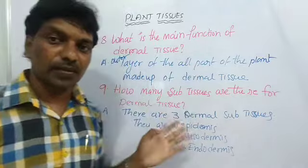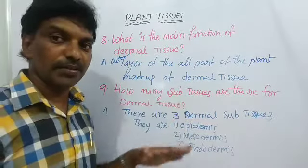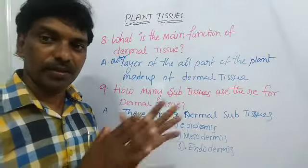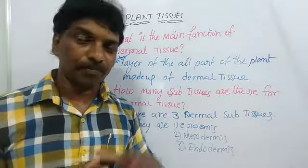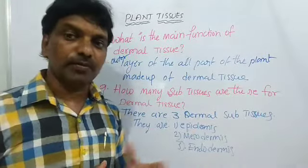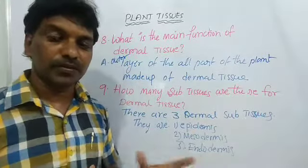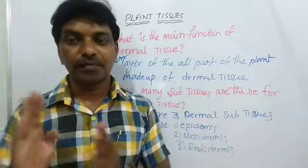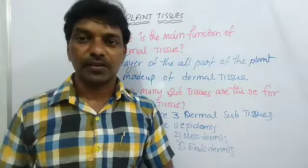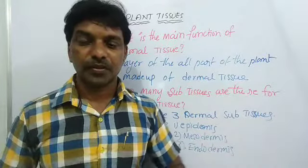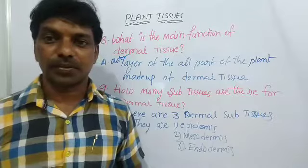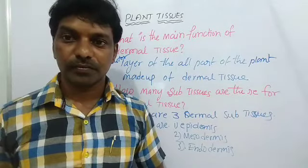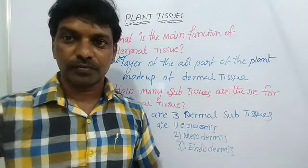These are the nine questions. First, Meristematic Tissue is complete, and second, Dermal Tissue is complete — that is part one. Next, in part two, we will discuss about Ground Tissue and Vascular Tissue. Those questions I will give in part two. Thank you.